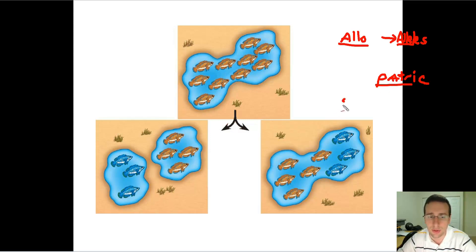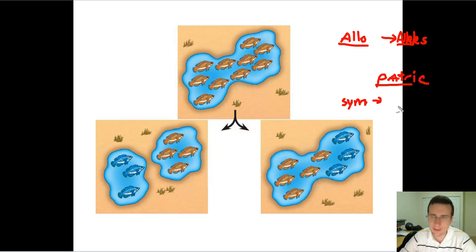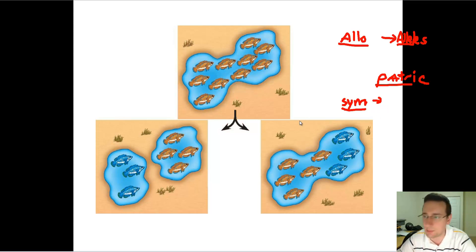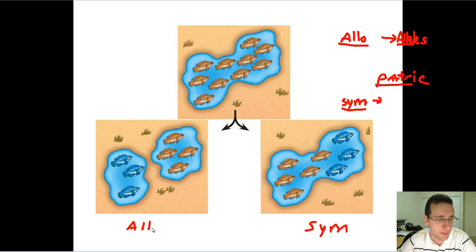What about sympatric? Have you heard the prefix 'sym' somewhere? In biology there are several examples: symbiosis, synergy, symmetry, synthesis. All of these 'sym' prefixes stand for 'together.' So sympatric speciation means together in the same place but parallel to each other. So this will be sympatric speciation because they're not separated physically, and this will be allopatric speciation because they are separated physically.